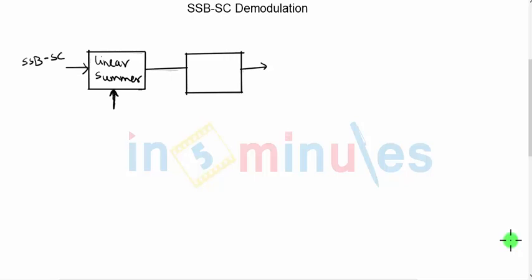Welcome to In5Minutes. Let us discuss the second approach to demodulate the SSB signal. In the first case, we multiply the received SSB signal with the carrier signal and pass it through the low pass filter. Let us now see what is another way to demodulate the SSB signal.